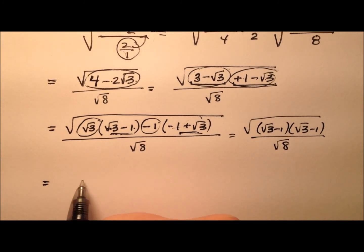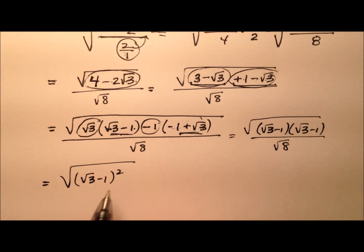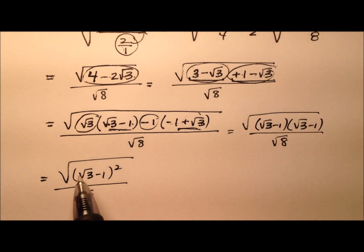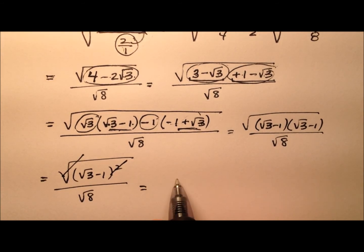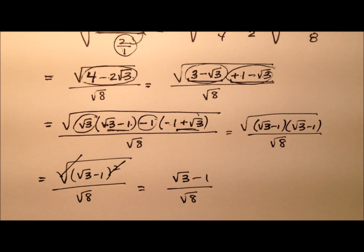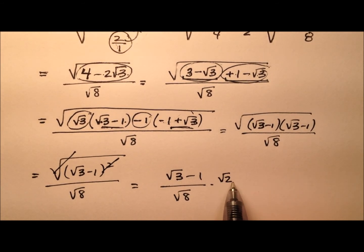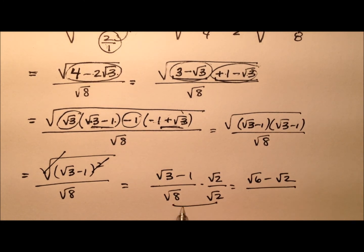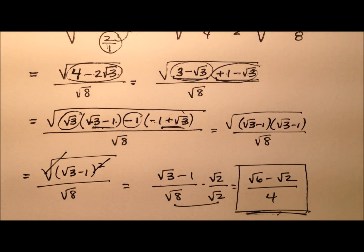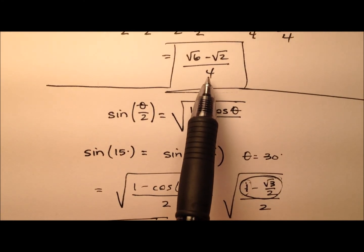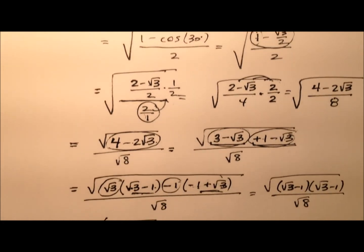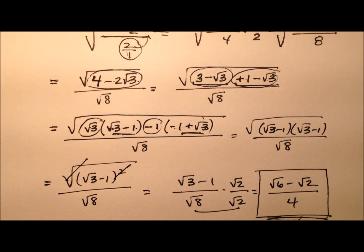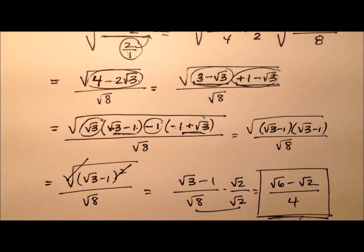So I can write that as a perfect square underneath the radical, all over the square root of 8. The square root and the square cancel each other out, leaving (√3 − 1) all over √8. Rationalizing by multiplying top and bottom by √2 gives (√6 − √2) all over √16, which is 4. So now it matches what we had before: (√6 − √2) / 4 — the same result we got using the difference formula. Two different ways to find the exact value for the sine of 15 degrees: the difference formula and the half angle identity.